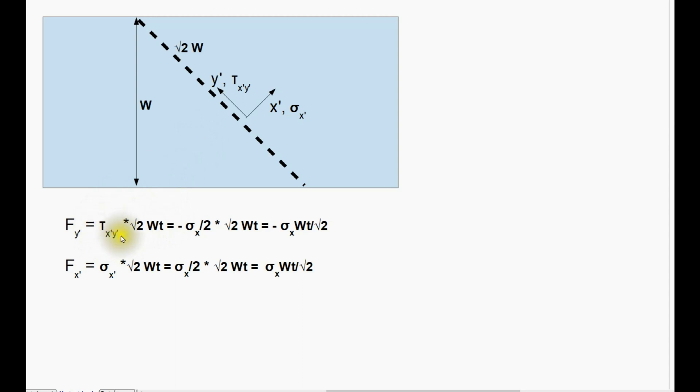Now from Mohr's circle, we know that tau X'Y' is sigma X over 2. We've actually got a minus sign, because it's acting in the negative Y direction, and we know the area root 2 times WT, so the total force is minus sigma X WT over root 2.